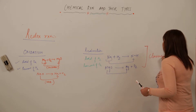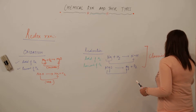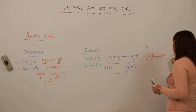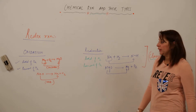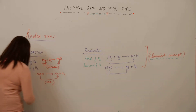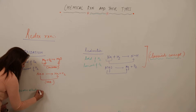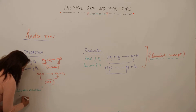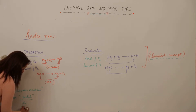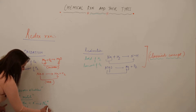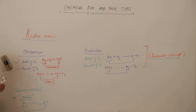We can also define oxidation and reduction in terms of the electronic concept. Whenever a substance loses electrons, it is said to be oxidized. All metals actually get oxidized. For example, sodium has one electron in its outermost shell; to attain stability it will lose that electron — so sodium is getting oxidized. Whenever an element loses an electron, it is said to be oxidized.